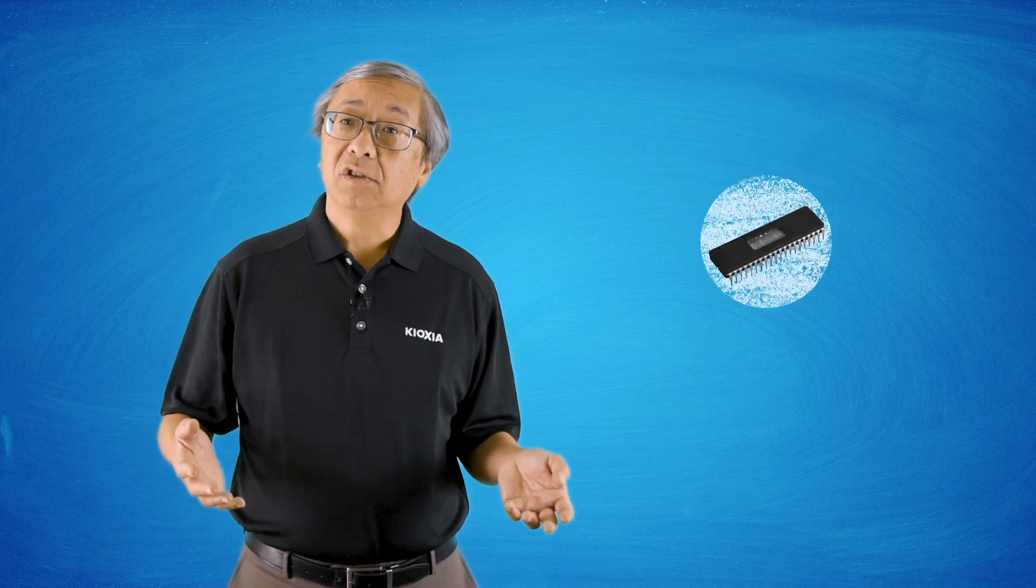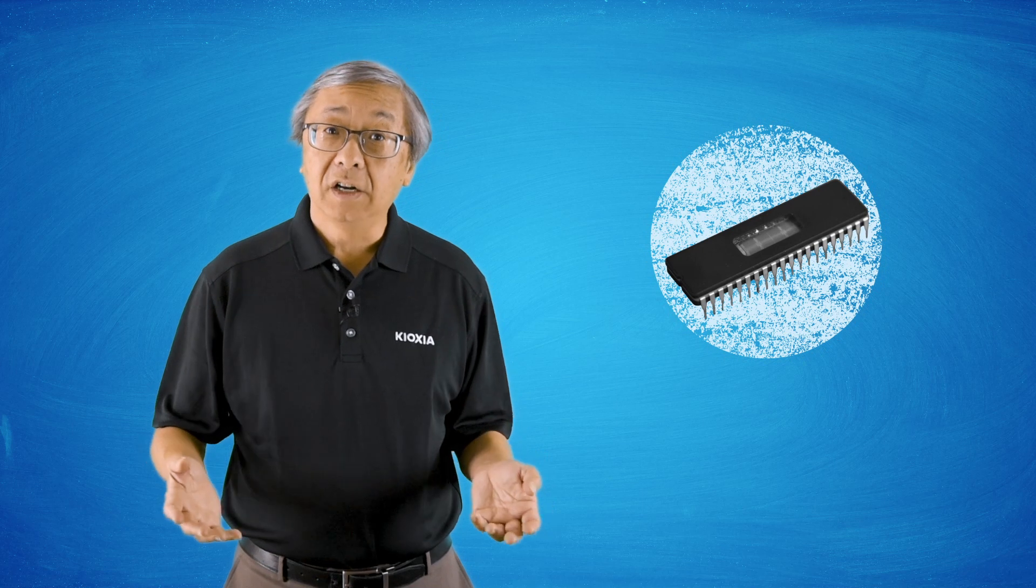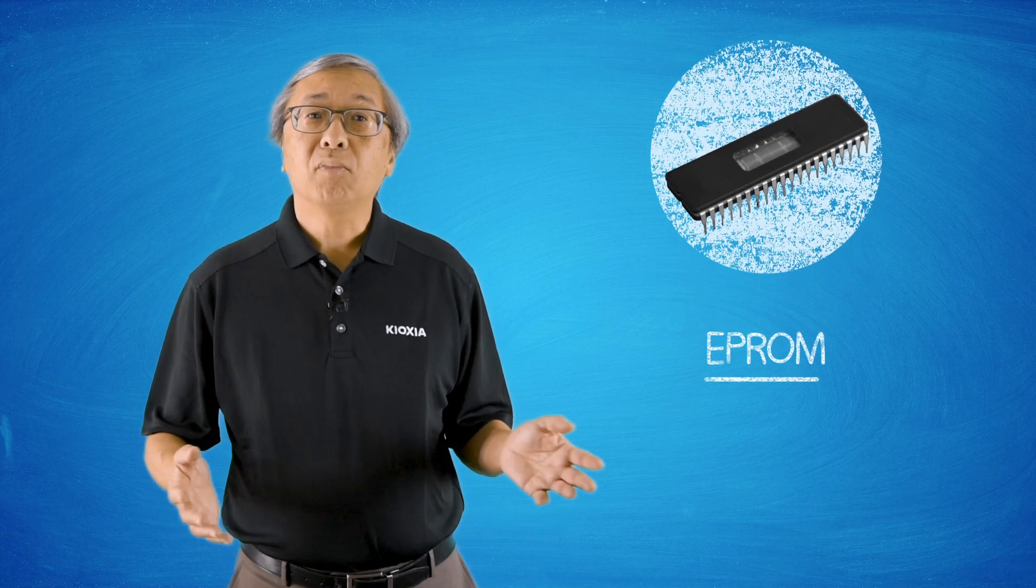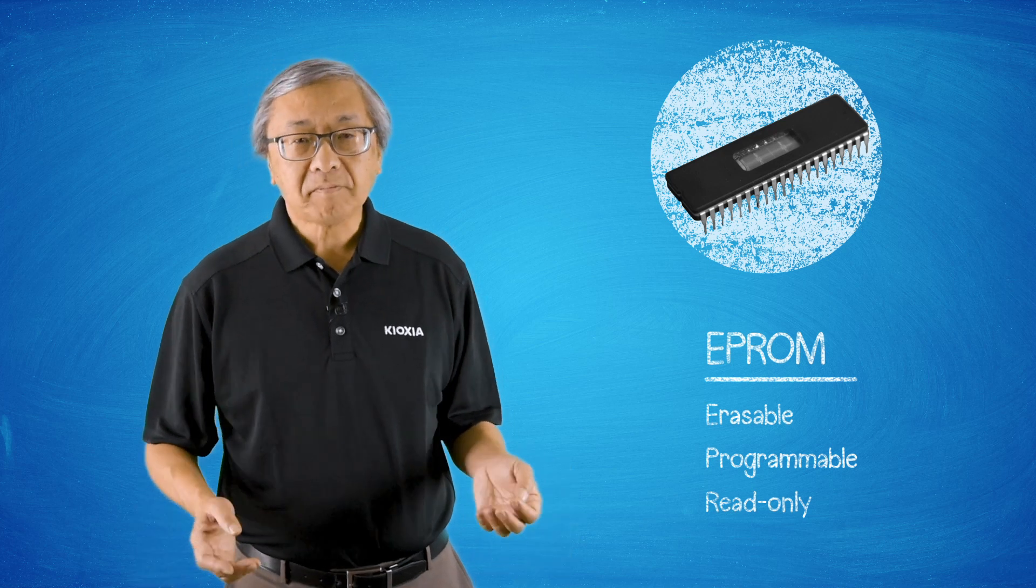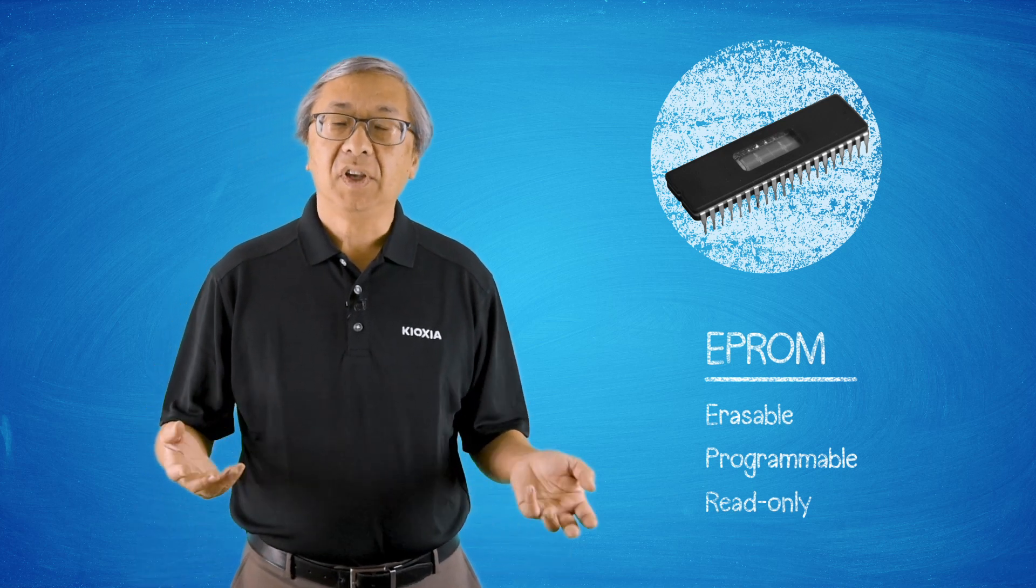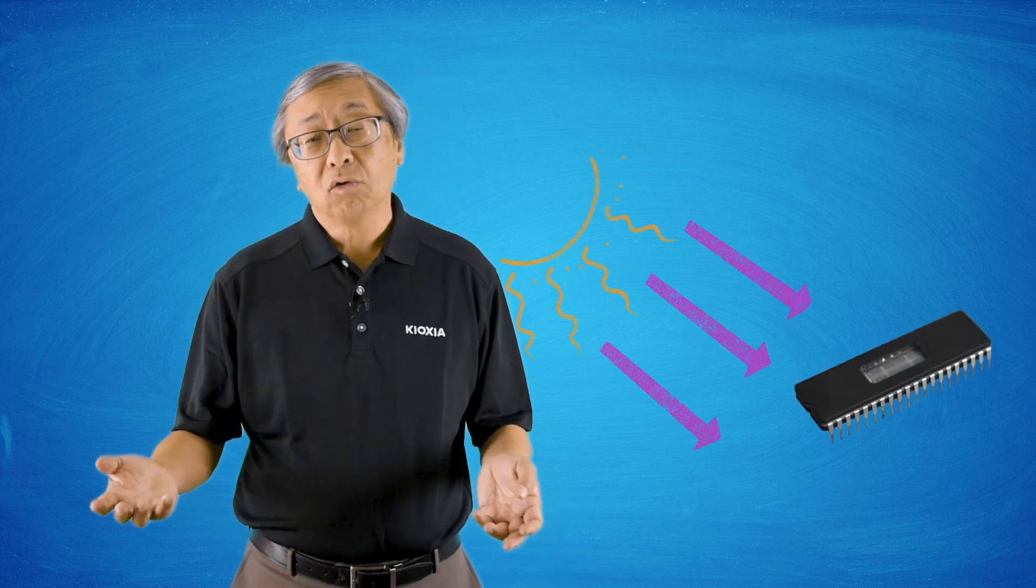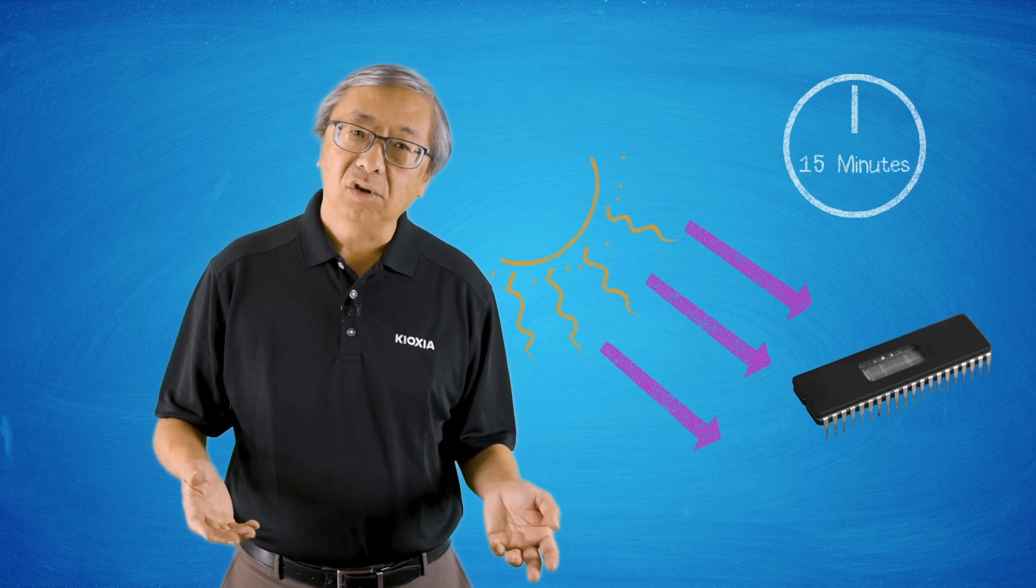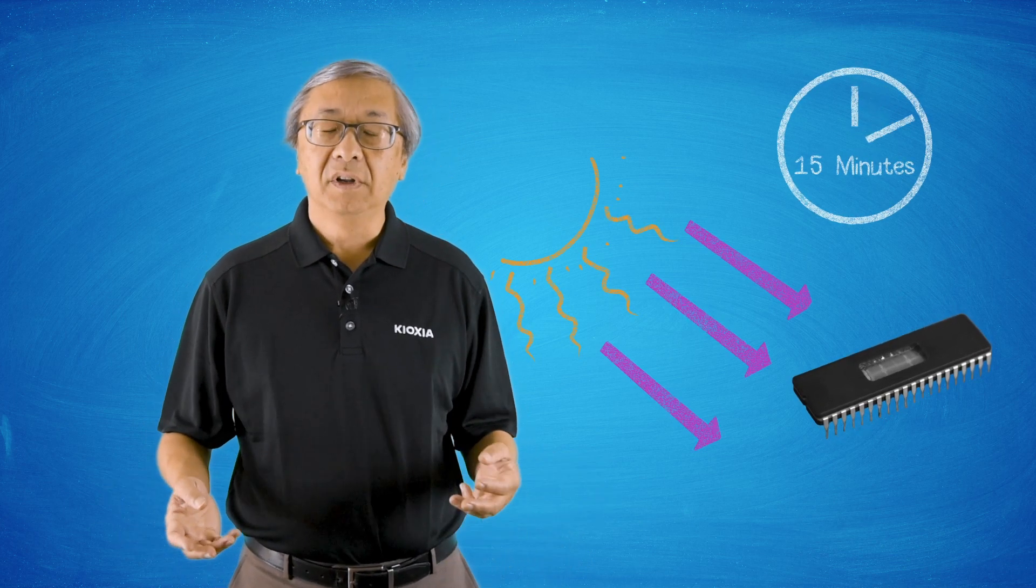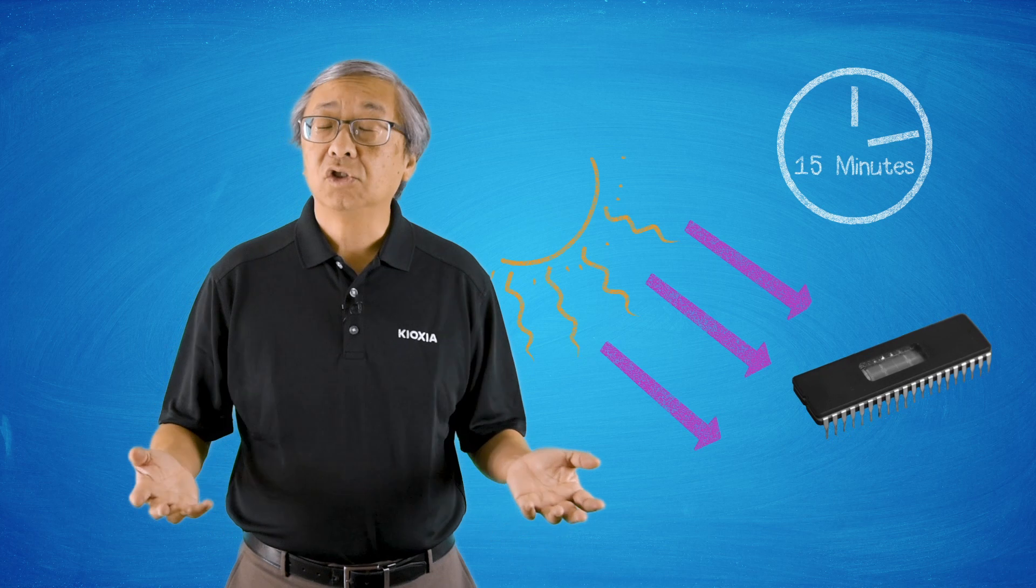Eventually people did want to be able to alter the data themselves, so EPROMs were invented. These were erasable programmable read-only memories and these types of EPROMs required ultraviolet light to erase. The user could program them, but they would have to put them under an ultraviolet light source for like 15 minutes to erase the chip.